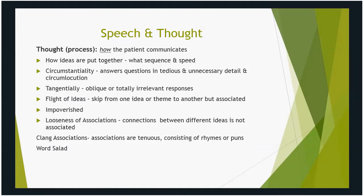Slide eight covers thought process — how does a patient communicate? How do they put words together, and what is the speed of their thoughts? Examples of thought process disturbances: circumstantiality is answering questions in tedious and unnecessary detail. For instance, if you ask how the patient got to the clinic today, they describe the make of their car, gas mileage, a stop at Starbucks, a neighbor encountered there — all extra, unnecessary information. Tangentiality is an oblique or totally irrelevant response.